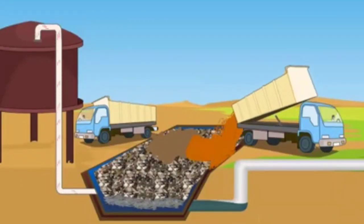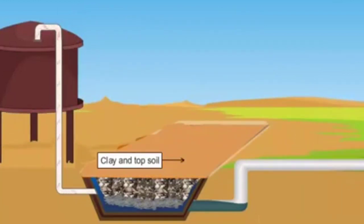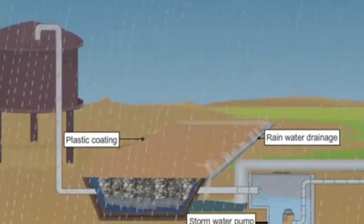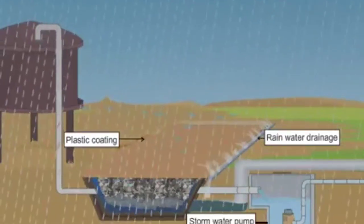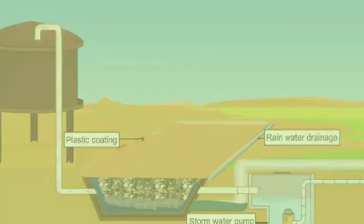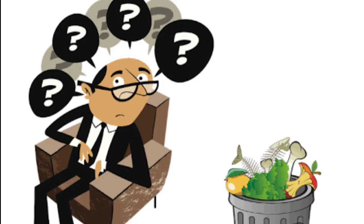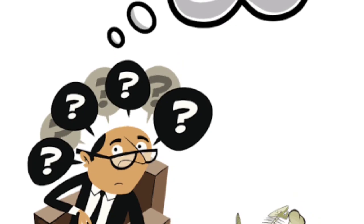The landfills are covered with a layer of clay and topsoil, along with a plastic coating. Specialized pipes are also fitted so that rainwater or surface water can drain out properly, ensuring no leakage of water. This is the ideal method for disposal of solid waste.